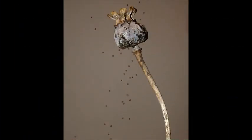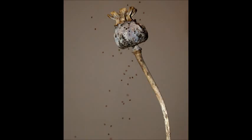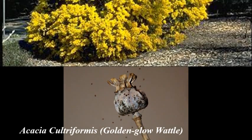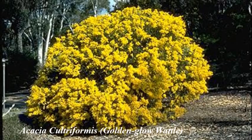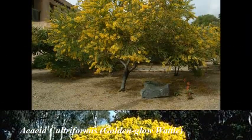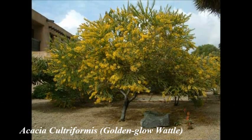Some seeds reside in pods. Once they contract and dry out, it sends an explosive discharge of seeds at high speed. Acacia cultiformis can scatter seeds from about two meters from the parent plant.